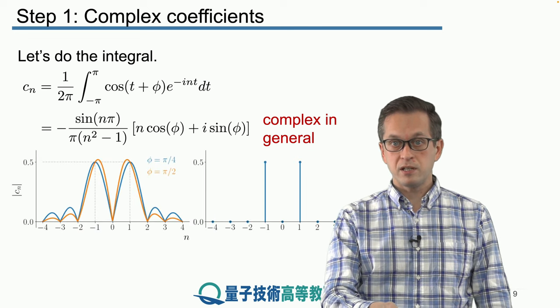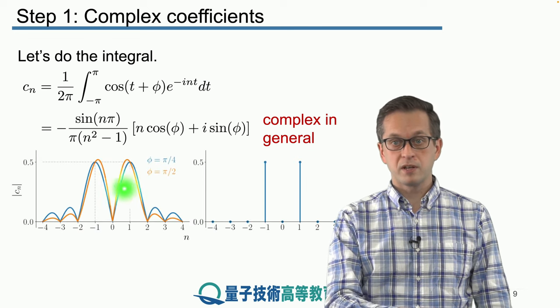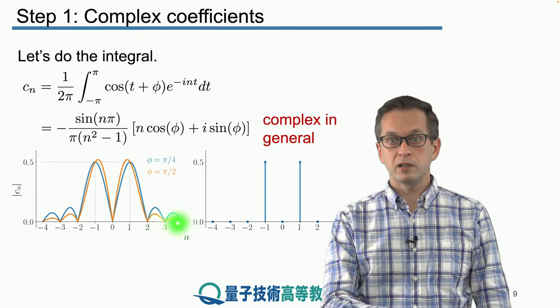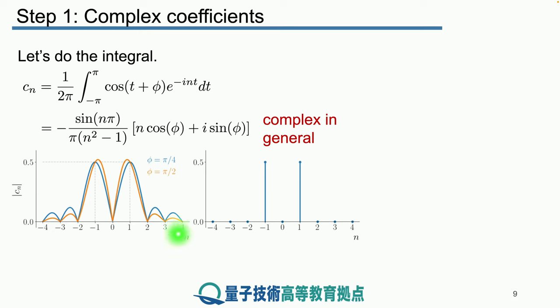And just to see how this cn now behaves, here we are plotting n and we are considering it to be a real number. So our argument is n. And we are interested in the modulus of the complex coefficients cn. And we really only care about the values where n is an integer. So 0, 1, 2, 3, 4, and also for the negative values as well.